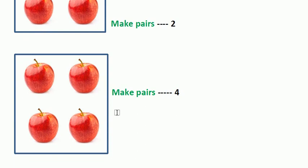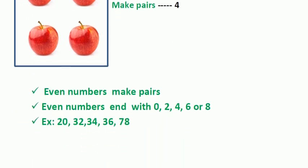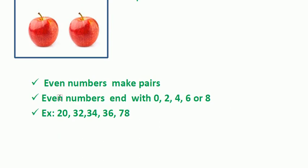So altogether we have four apples, and all these four apples make a pair. The numbers which make pairs are called even numbers.